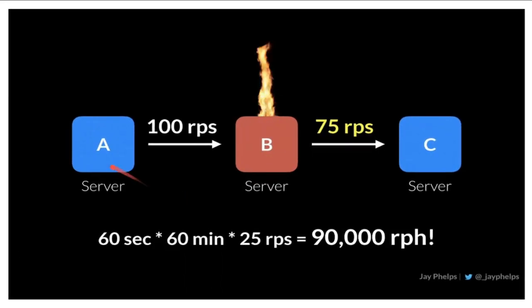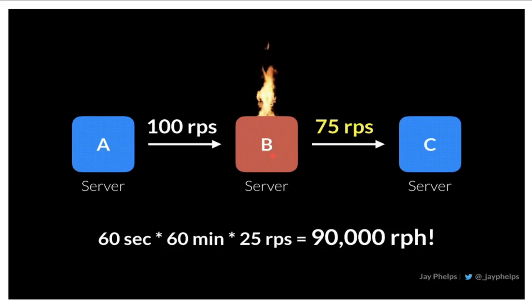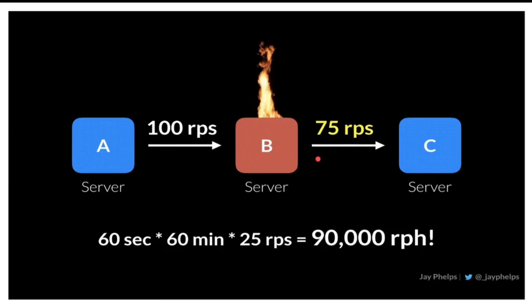Let's see another example. Server A makes 100 requests to Server B, whereas Server B can handle only 75 requests. So back pressure will be built since Server B cannot handle more requests, and it will be a problem. This is called back pressure.